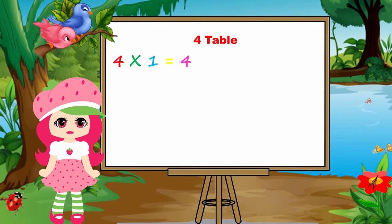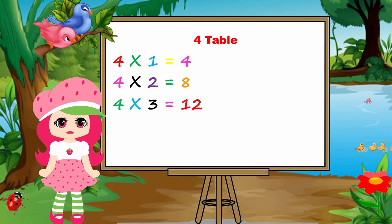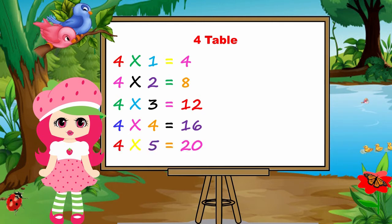4 ones are 4. 4 twos are 8. 4 threes are 12. 4 fours are 16. 4 fives are twenty.